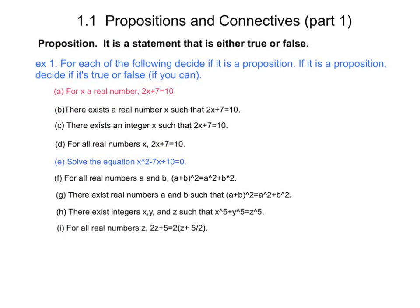For a similar reason, f is a proposition which is false and a counterexample might be a equals 1 and b equals 1. The left side would be 4 and the right side would be 2.